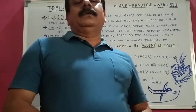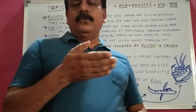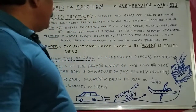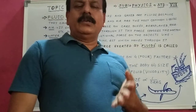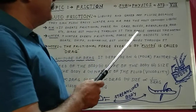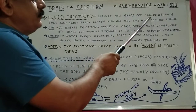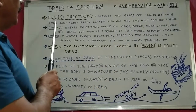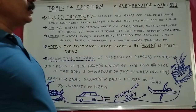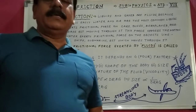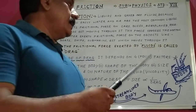First, what is fluid? Liquids and gases are all fluids because they can flow easily, so they have a special type of friction. Friction accepted by liquids and gases is known as fluid friction. Water and air are the most common examples — water as a common liquid and air as a common gas.